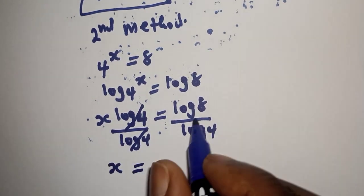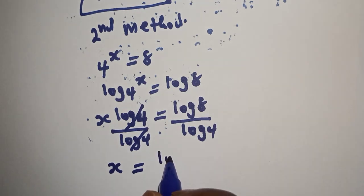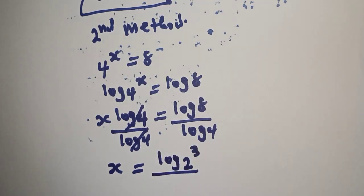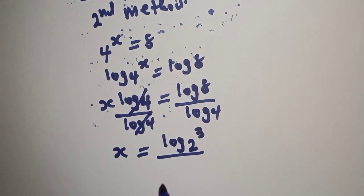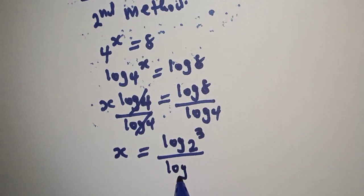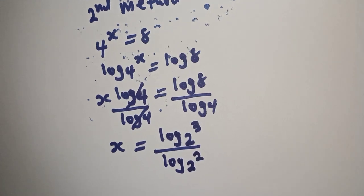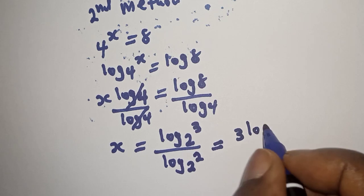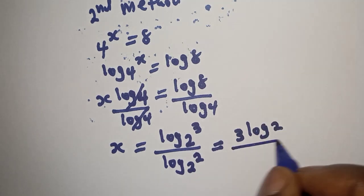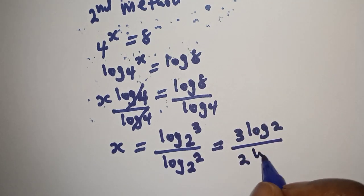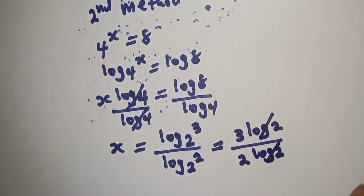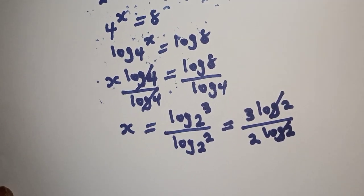After cancelling log 4, we have s is equal to log 8 over log 4. Log 8 can be written as log 2 raised to power 3, and log 4 can be written as log 2 raised to power 2. This gives 3 log 2 over 2 log 2, and the log 2 terms cancel.